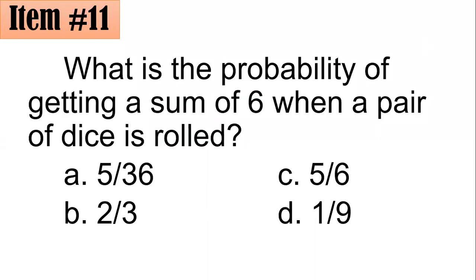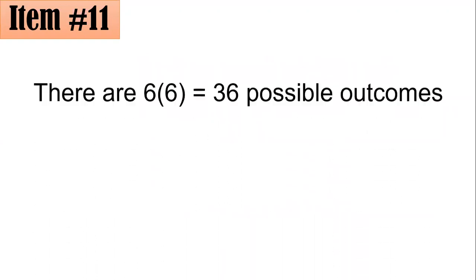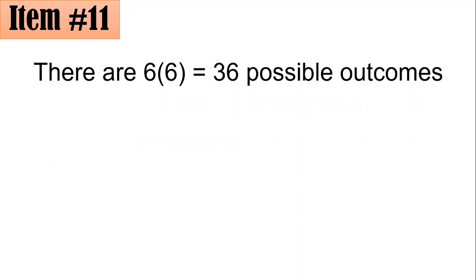Let's move on to item number 11. What is the probability of getting a sum of 6 when a pair of dice is rolled? Is it 5 over 36, 2 thirds, 5 sixths, or 1 ninth? Based on what we did earlier, by the fundamental counting principle, there are 6 times 6 or 36 possible outcomes in all when rolling two dice.